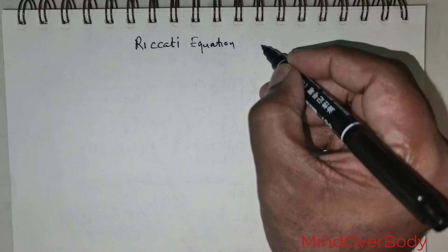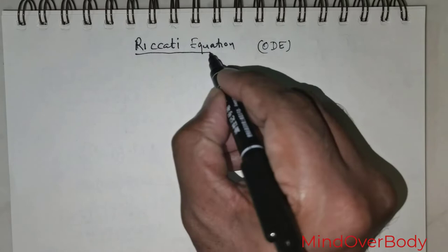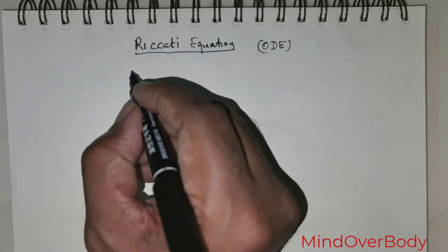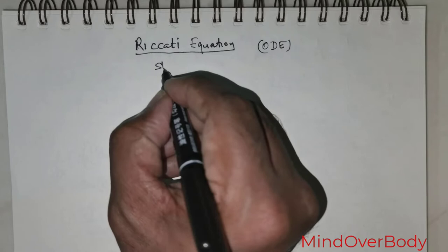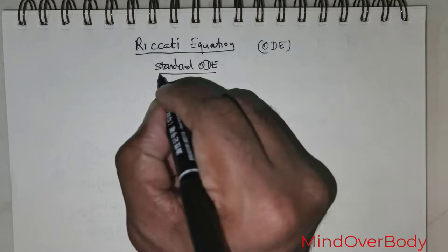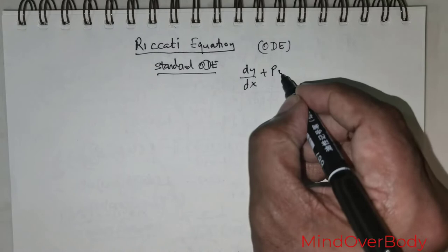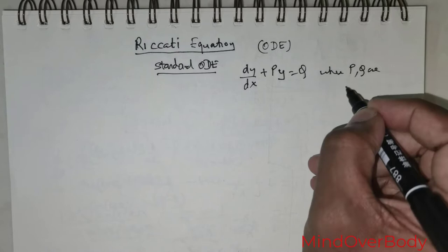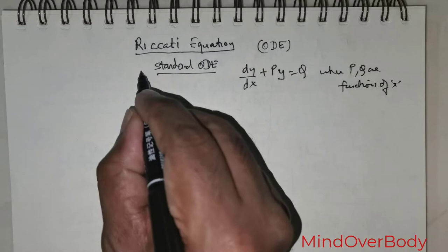Welcome students. In this class we will be learning how to handle a special type of differential equation which goes by the name Riccati. Now foremost let us have a brief review of whatever we have done. We started off learning what is called the standard ordinary differential equation. The form is dy/dx + p times y = q, where p and q are functions of x. So this is the first type we studied.